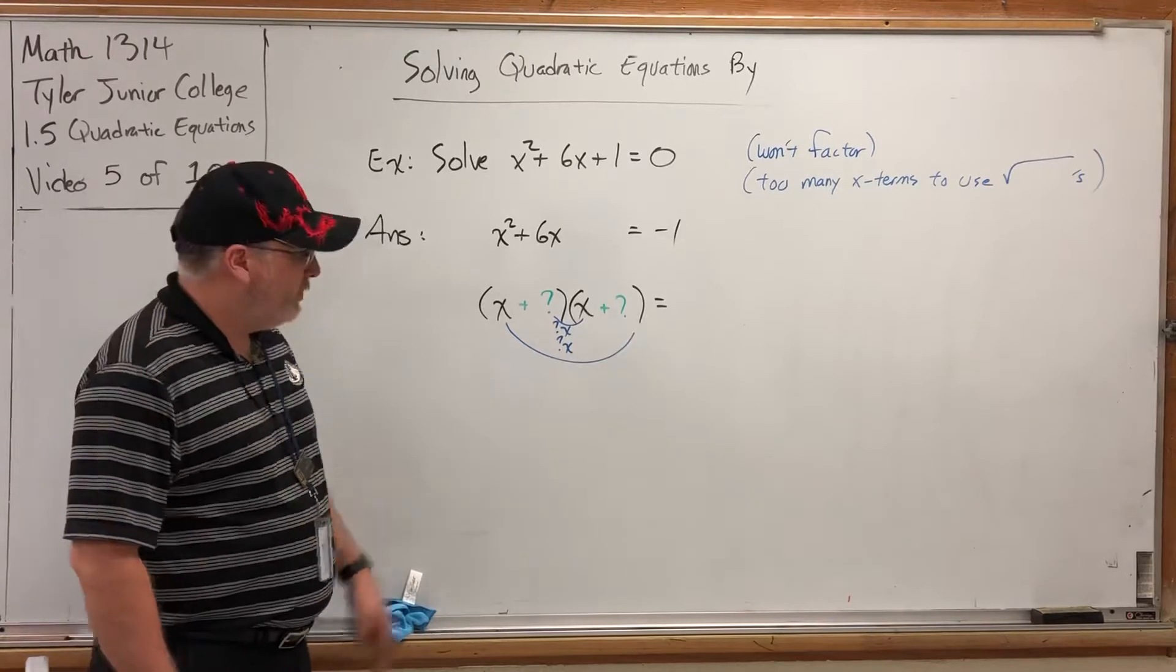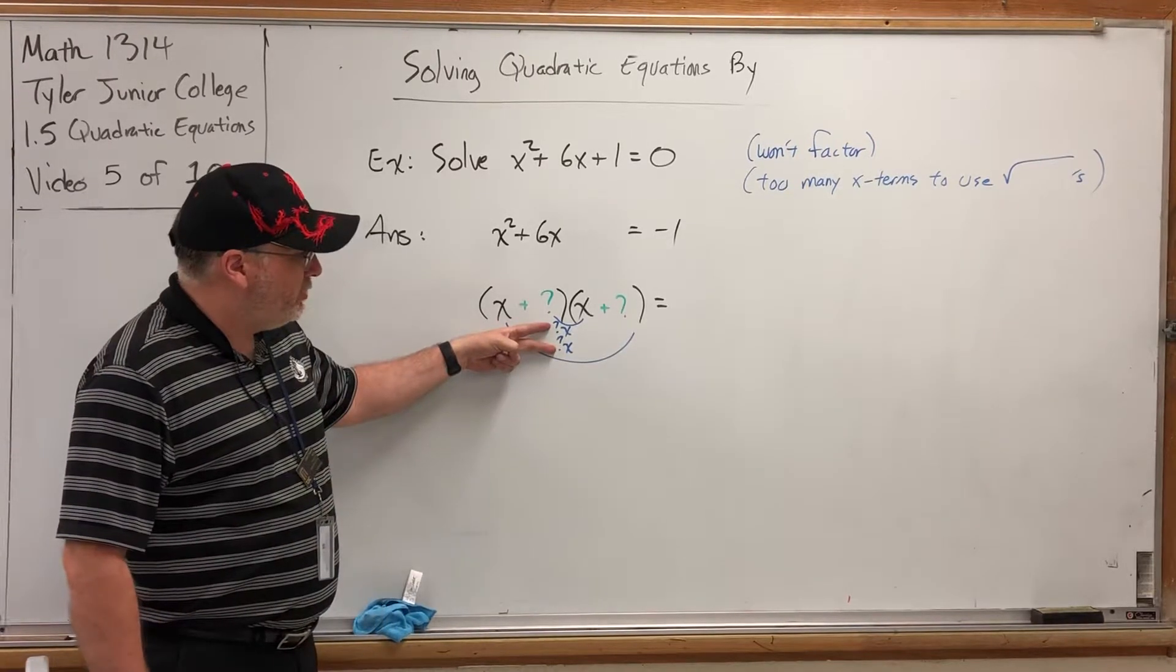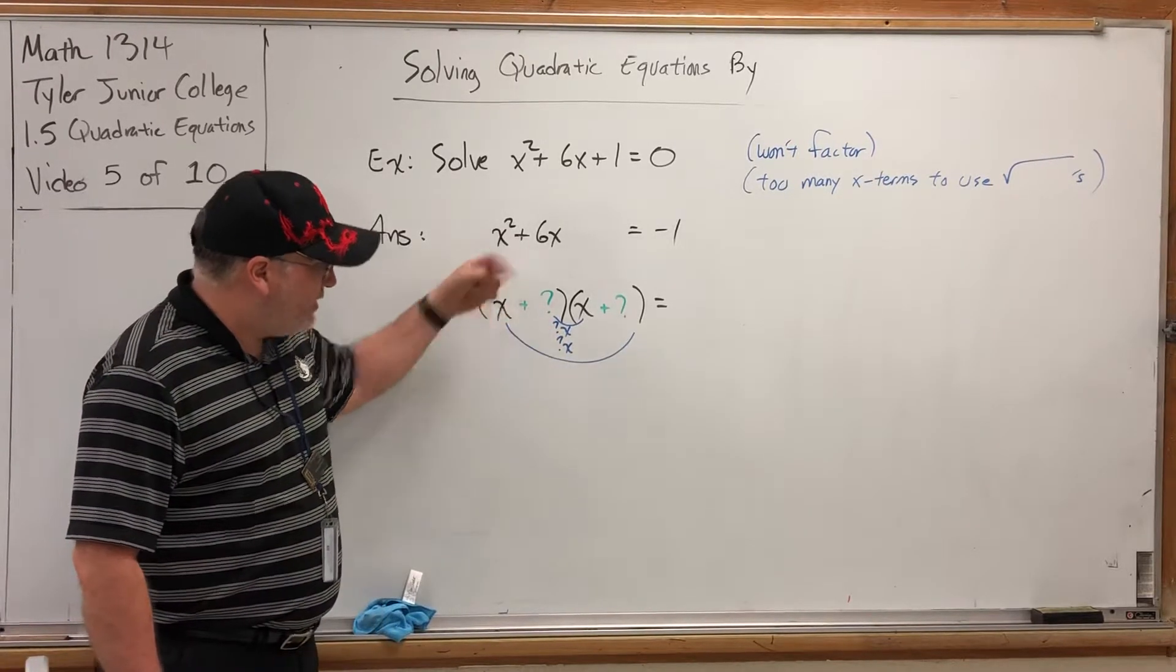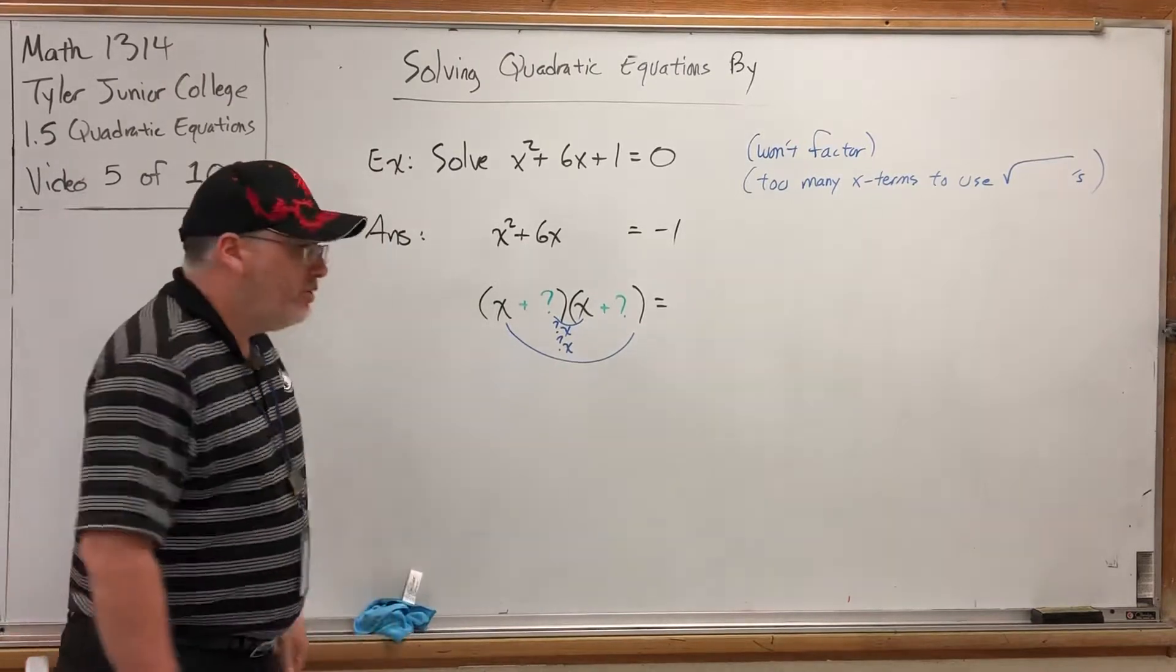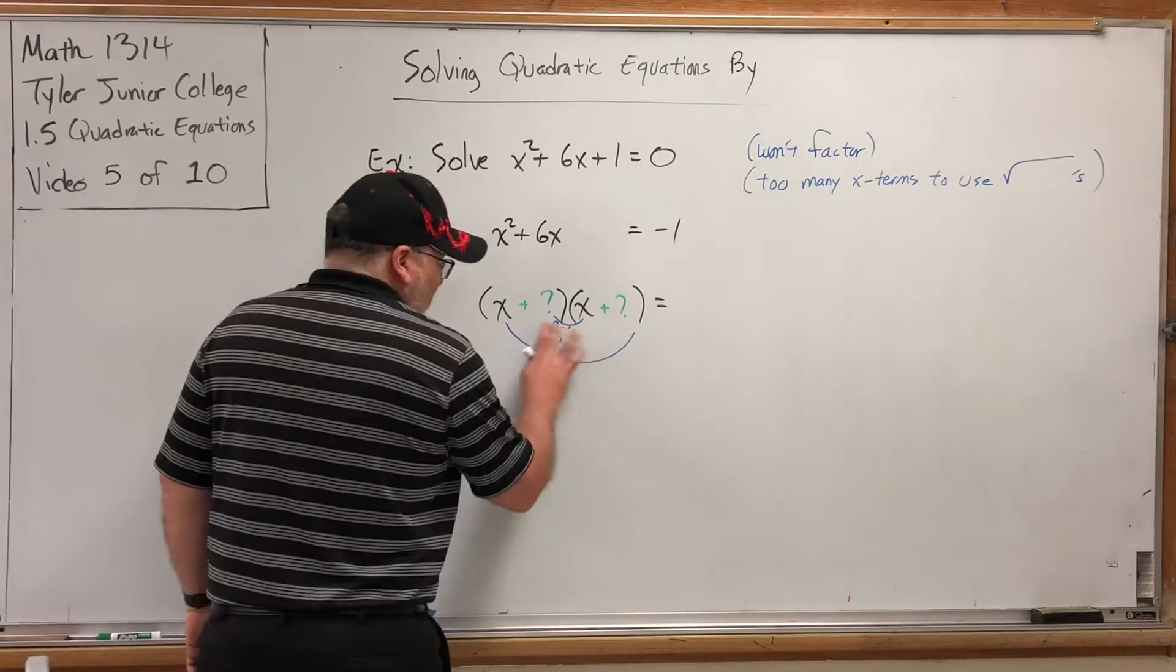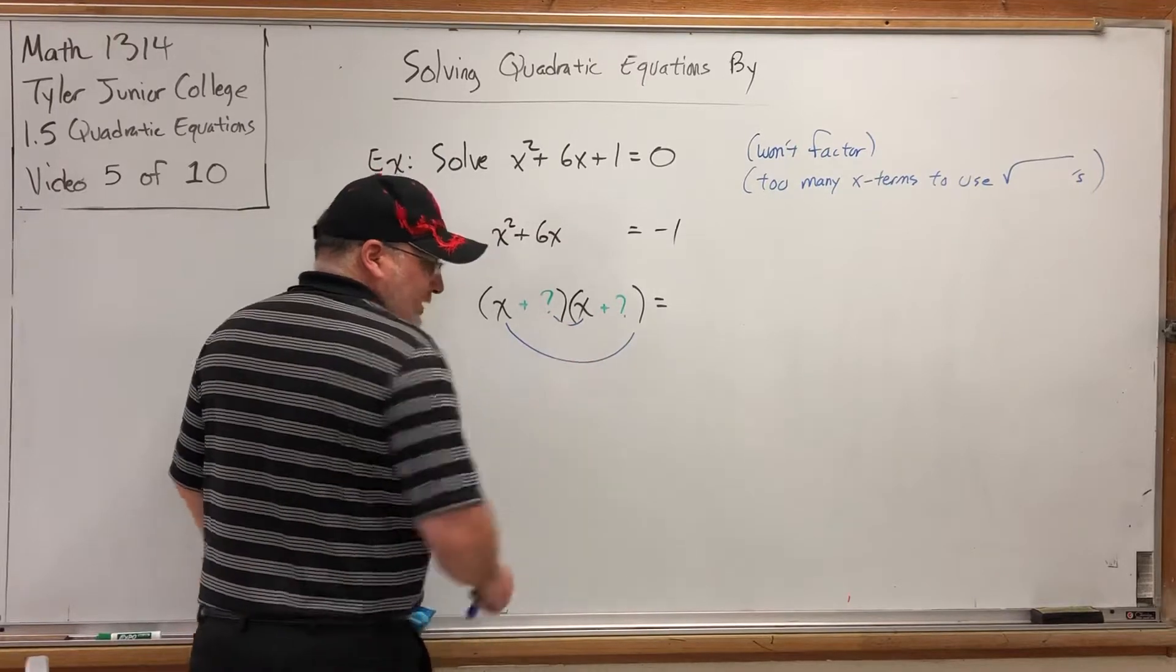When I combine these x terms, it's supposed to give a plus 6x. So here's what I know. Now, these have to match. They have to be the same. And they have to add to give positive 6x.